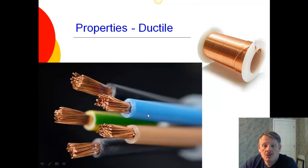And metals are also ductile. They can typically be drawn into wire, most of them. So, if you look at copper, for example, it can be drawn into wire.